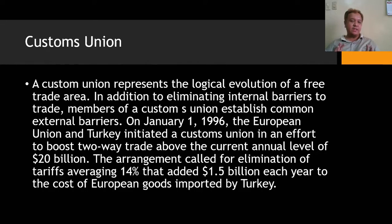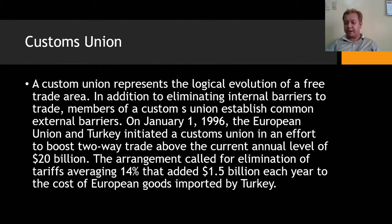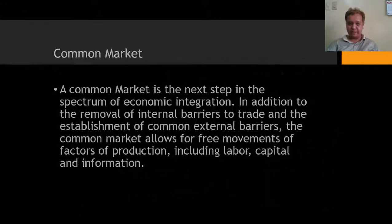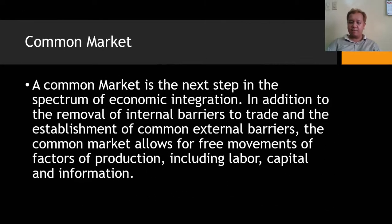In January 1996, the European Union and Turkey initiated a customs union to boost two-way trade above its then-current annual level of 20 billion US dollars. The arrangement called for elimination of tariffs averaging 14%, which had added 1.5 billion dollars each year to the cost of European goods imported by Turkey. A common market is the next step in economic integration: beyond removing internal barriers and establishing common external barriers, it allows free movement of factors of production including labor, capital, and information.